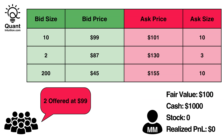In the next step, another market participant steps in and wants to sell two shares of the stock for $99. This hits your $99 bid and your bid order gets executed with a volume of two, leaving eight shares remaining on this bid. Your position changes: you are now long two shares of the stock and have $198 less in cash, as you paid twice $99, so your cash position is now reduced to $802.